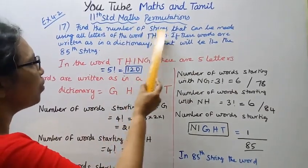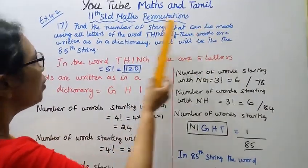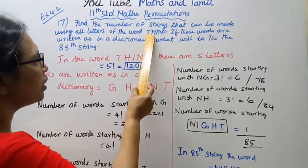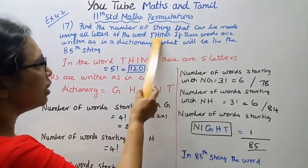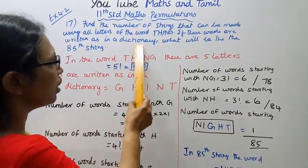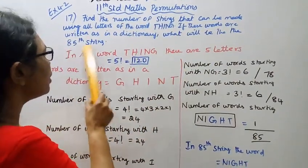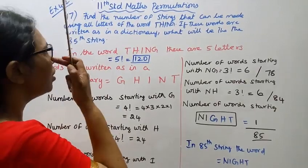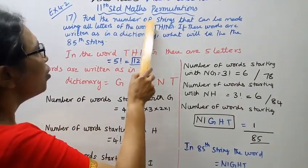Find the number of strings that can be made using all the letters of the word THING. If these words are written as in a dictionary, what will be the 85th string?